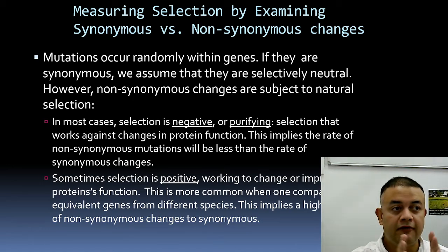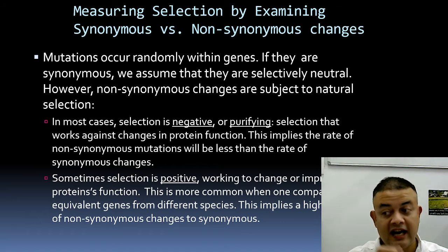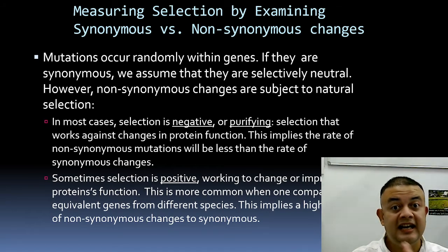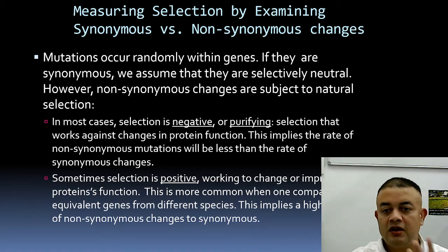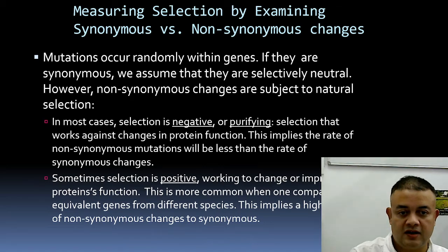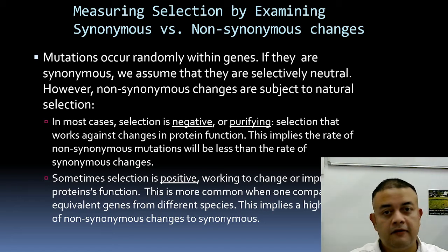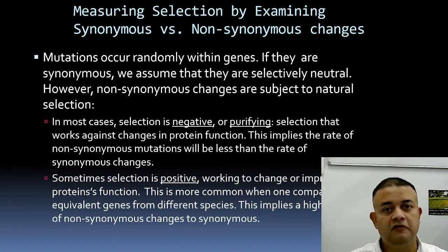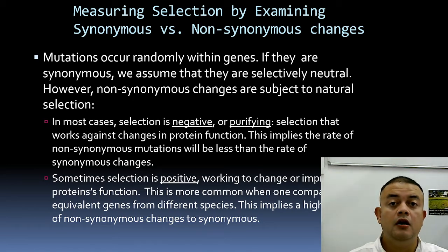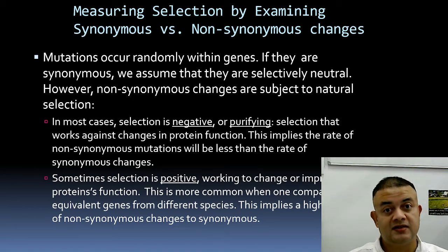Purifying selection works against changes in protein function. Negative or purifying selection implies that the rate of non-synonymous mutations will be less than the rate of synonymous changes. Most mutations in protein-coding regions are synonymous — no problem — but non-synonymous mutations have huge ramifications.